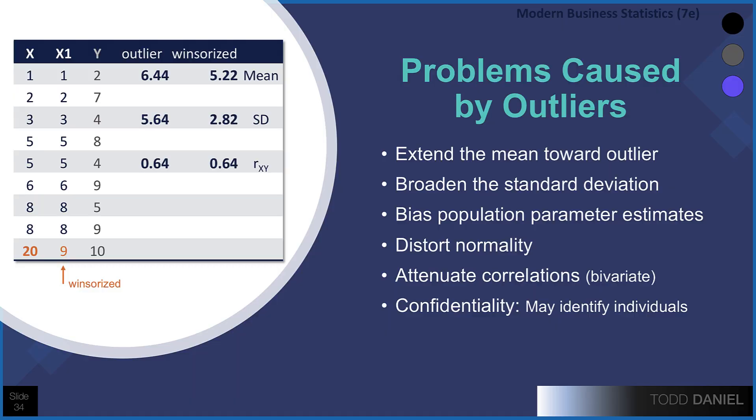Outliers will distort normality — when we plot these scores, we will see the outliers in the histogram. They will also attenuate correlations, particularly when we have bivariate outliers. I correlated x and x1 with a y score, and you'll see the correlations are both 0.64, but if we had an outlier in the y, we would see that distortion occurring. Finally, outliers can compromise confidentiality — you may inadvertently identify certain individuals in your study. The professor age example illustrated this: one outlier identifies one particular individual, which compromises confidentiality, especially if you're making your raw data available to other researchers.